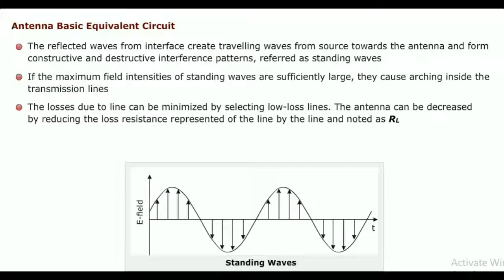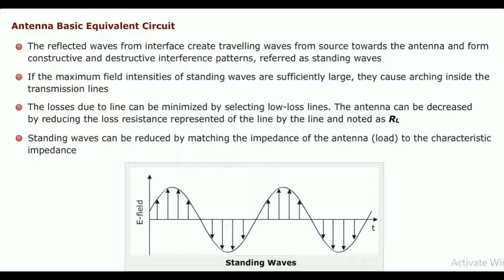The losses due to line can be minimized by selecting low loss lines. The antenna losses can be decreased by reducing the loss resistance represented by RL. Standing waves can be reduced by matching the impedance of the antenna or load to the characteristic impedance.